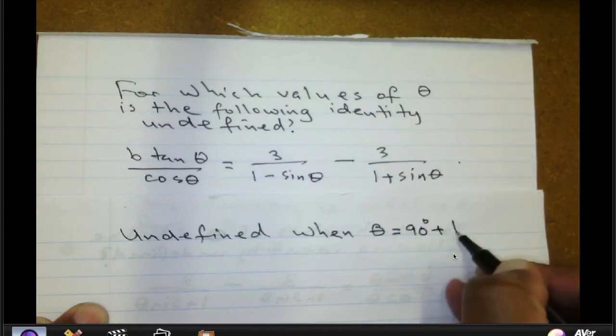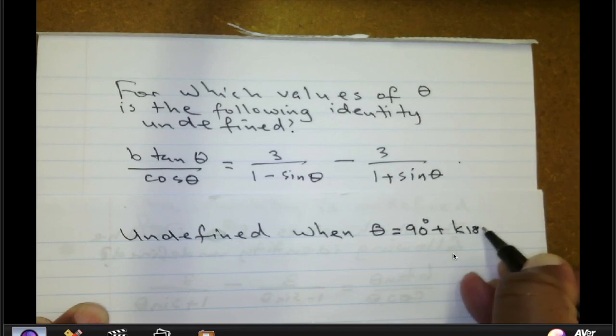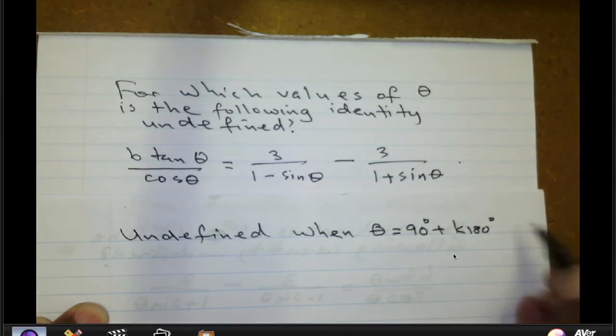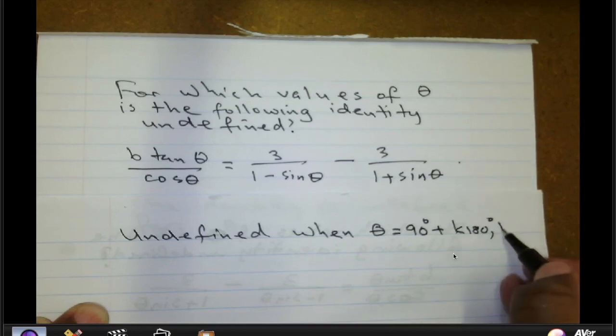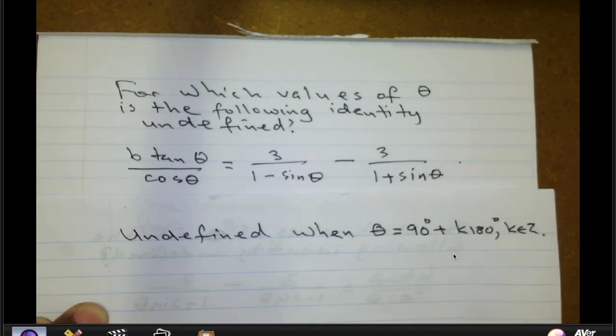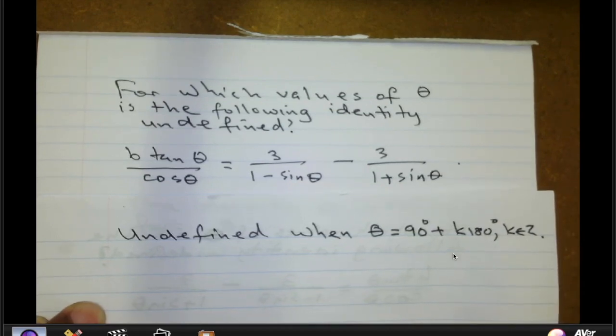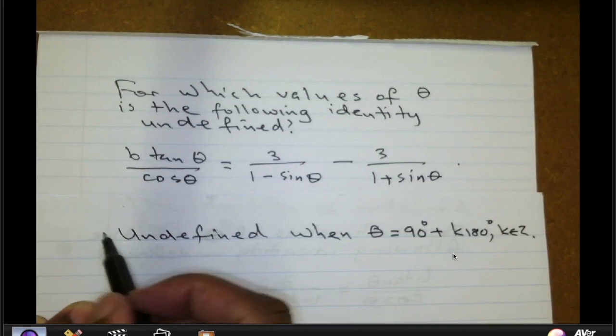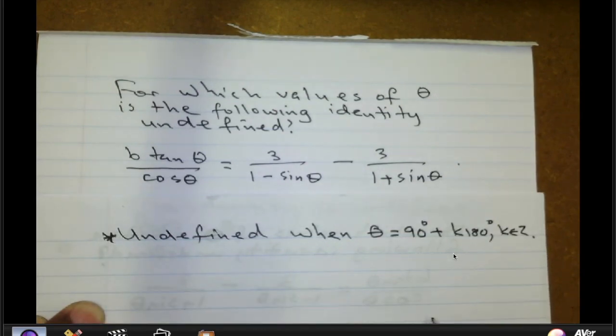But we can add as many 180 degrees as we want because the tangent function is periodic about 180 degrees. So the period is 180 degrees. So that is one answer there that we get using the fact that tan theta is undefined when theta is 90 degrees.